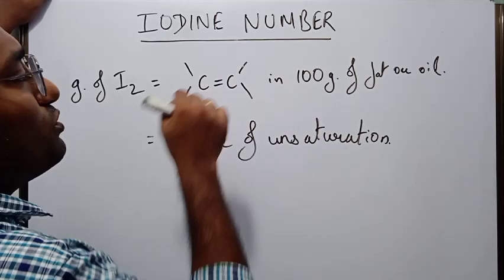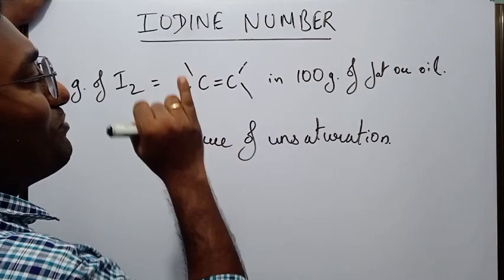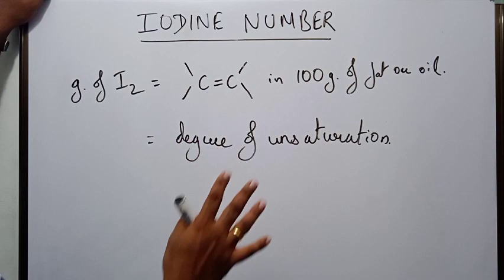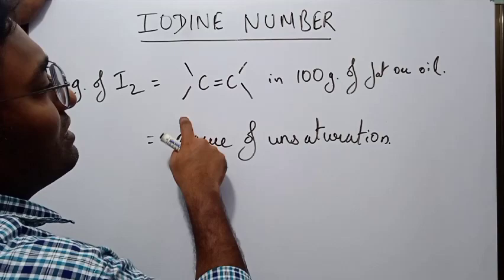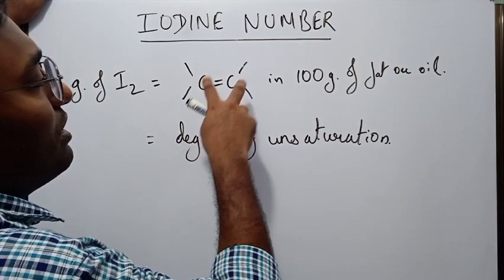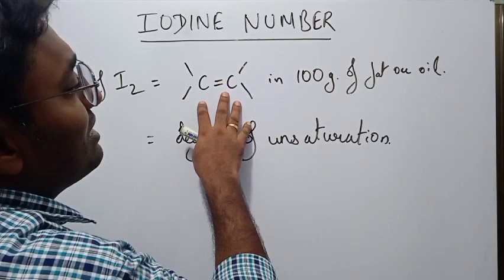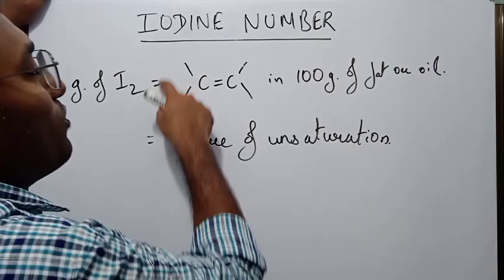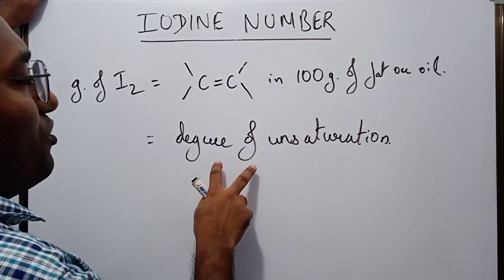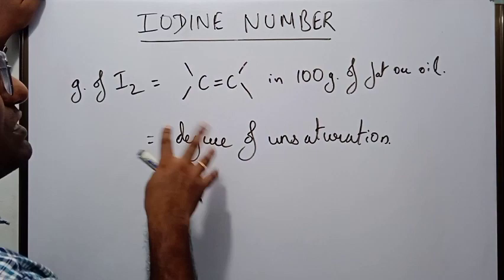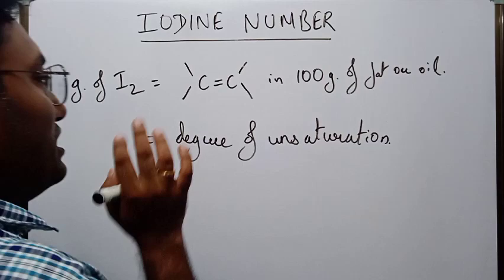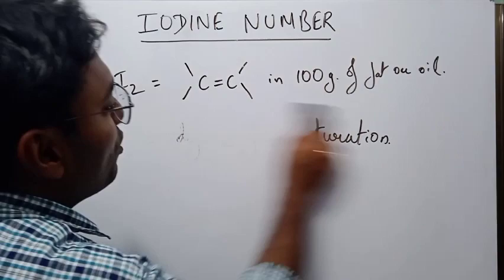The second question is: what is the need? Why do we want to know the degree of unsaturation or the degree of carbon-carbon double bonds in a sample of fat or oil? The answer is we can know a lot of things. Carbon-carbon double bonds are very reactive — the oil can easily react with moisture and oxygen, and can easily get rancid. For more on significance, please refer to the first part of this video.